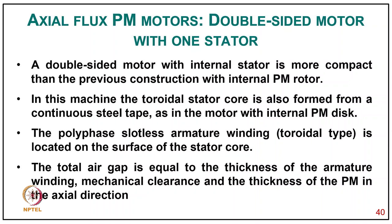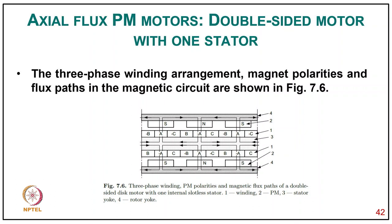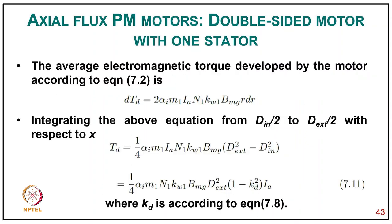The double-sided motor with the internal stator is more compact than the construction with an internal PM rotor. In this machine the toroidal stator core is formed from a continuous steel tape, and the polyphase slotless armature winding (toroidal type) is located on the surface of the stator core. The toroidal gap equals the thickness of the armature winding, mechanical clearances, and the thickness of the PM in the axial direction. The double-sided rotor with PMs is located on two sides of the PM stator. The three-phase winding arrangement, magnet polarity, and flux path in the magnetic circuit are shown in the figure.